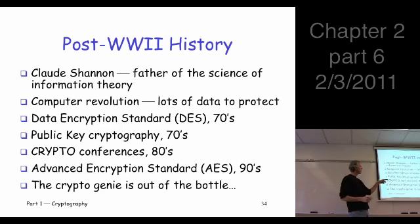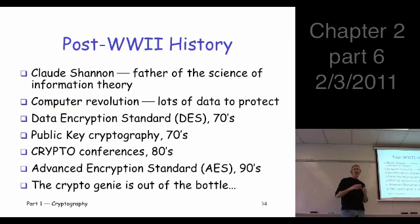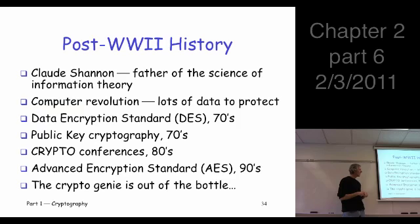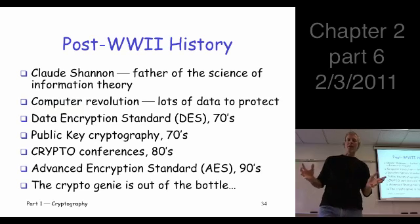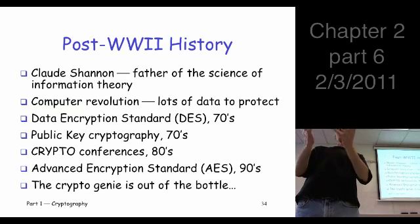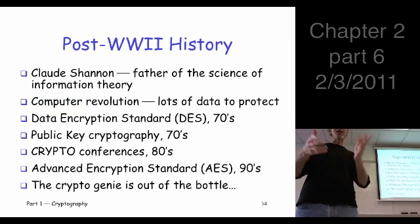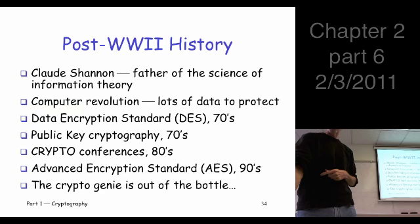Moving on from there, things moved pretty rapidly. This is where cryptography first breaks out into the academic and industrial community. In the 70s, you have public key cryptography being developed. In the 80s, you have crypto conferences where some of the best cryptography is being done. Really in the 70s, cryptography moved out of government control — the genie's out of the bottle, and nobody's ever going to put it back.